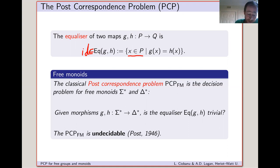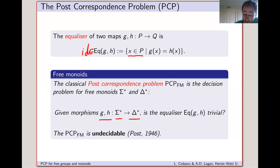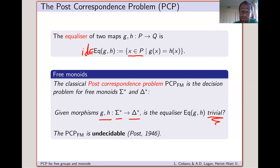So given morphisms G and H going from sigma-star to delta-star — from the free monoid on the alphabet sigma to the free monoid on the alphabet delta — is the equalizer of these two maps trivial? Post famously proved that this problem was undecidable.